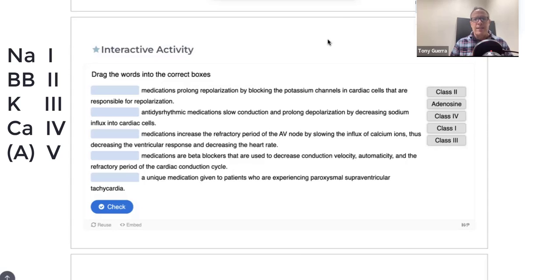And the mnemonic is NABKCA, so NAB for sodium NA, and the B for beta blocker. It may help if you do NABB, that may help you even more, and then K for potassium blocker or potassium channel blocker, and then CA for calcium channel blocker.